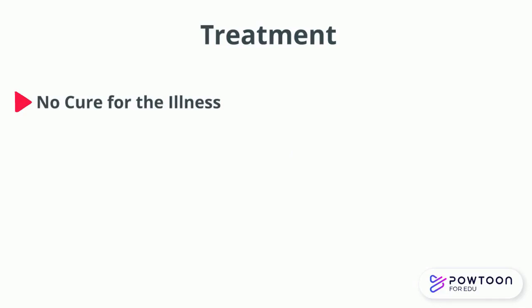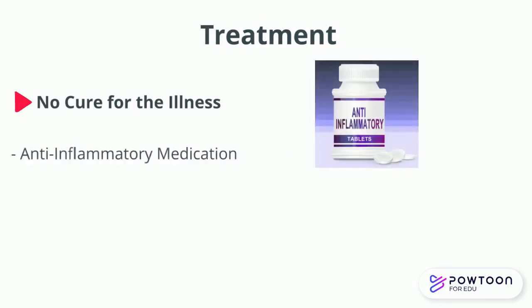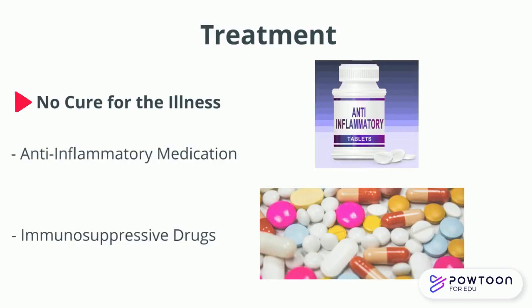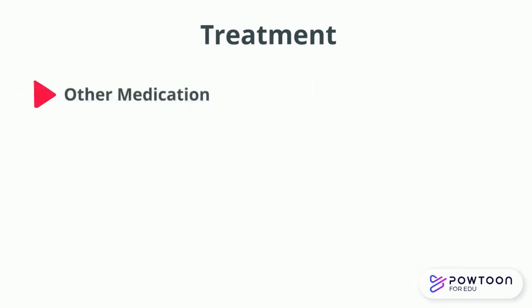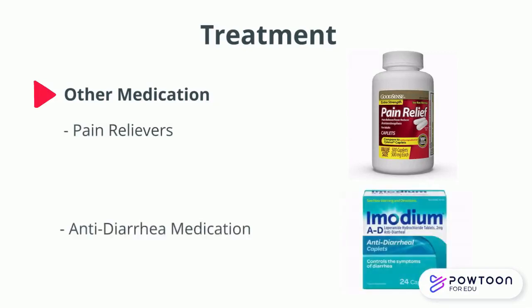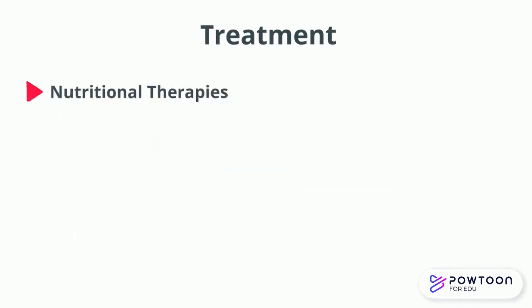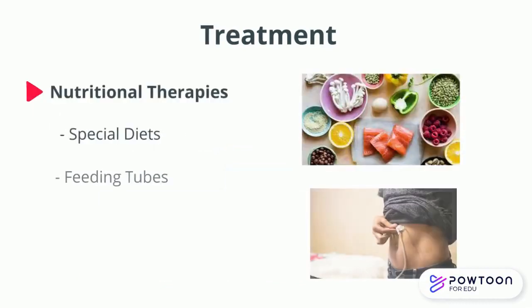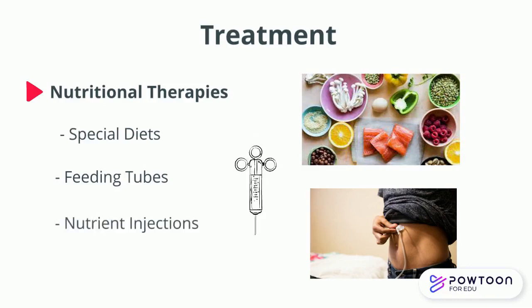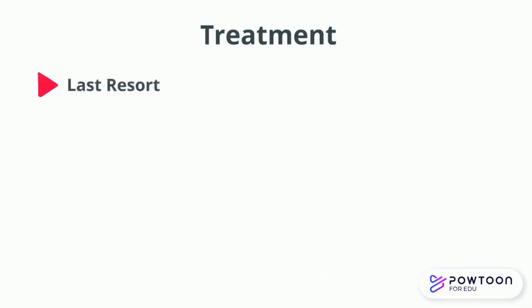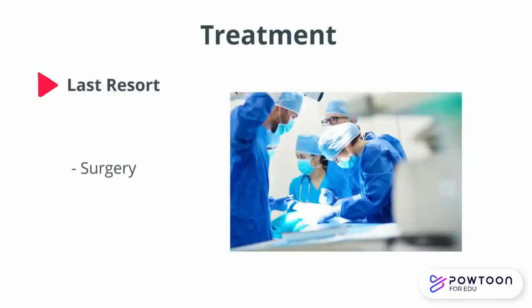Currently, there is no cure for this illness, but there are ways to manage the symptoms. Medications like anti-inflammatory drugs and immunosuppressors can bring down the inflammation in the bowels by inhibiting or reducing the activity in the immune system. Other medications like pain relievers and anti-diarrheals can ease the painful symptoms, and supplements can help regain nutrients that may have been lost. Nutritional therapies like special diets, feeding tubes, and nutrient injections can also be used to allow the bowels to rest and heal. If all other treatments fail, surgery to remove a damaged part of one's intestines can be a good option for emergency relief of extreme symptoms.